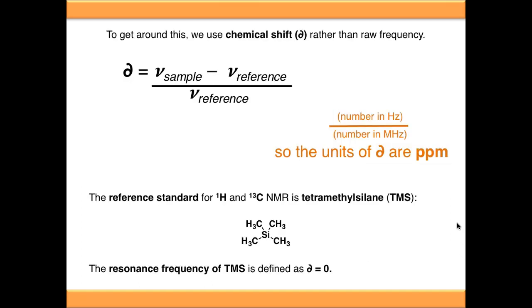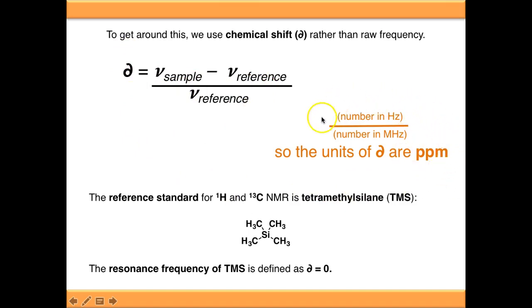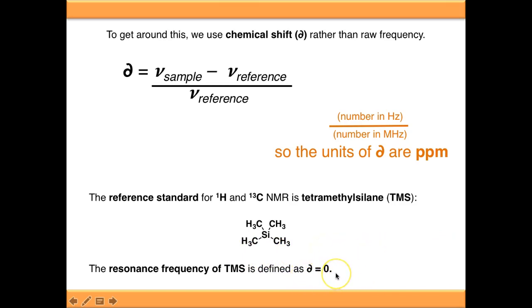To get around this, we use the idea of chemical shift. This is the frequency of the sample minus the reference frequency, all divided by the reference frequency, which gives you the chemical shift. The units of this are PPM — this comes from the fact that you're dividing a number in hertz by a number in megahertz, so you're dividing by a million. The reference standard for all NMR spectrometry is tetramethylsilane, and this is defined as having a chemical shift of zero.